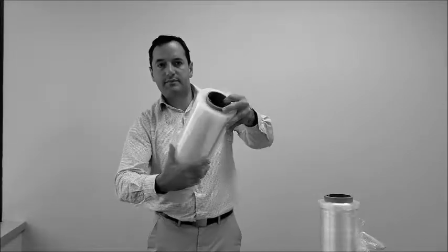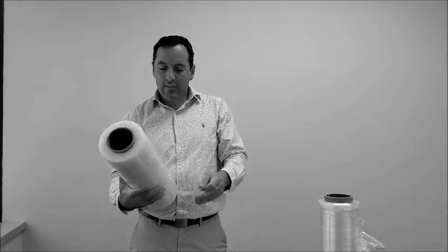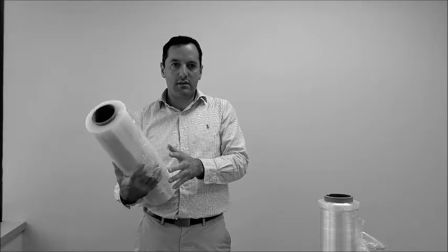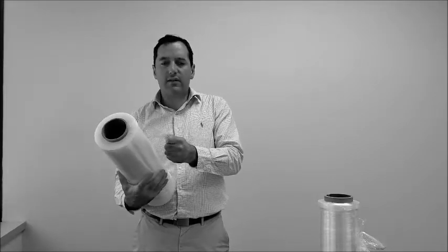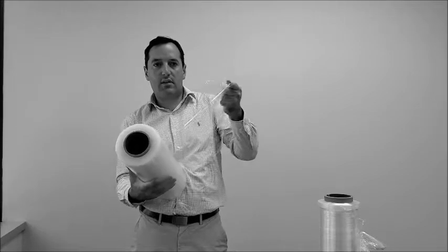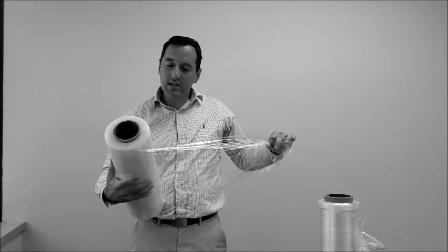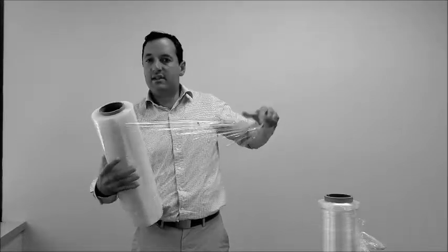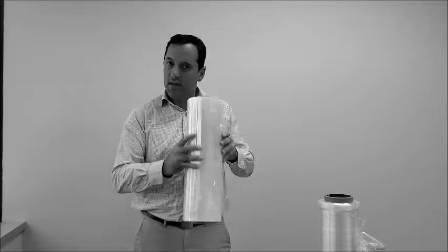The cast stretch wrap, it's got very high clarity, great for scanning barcodes. And it's got a very smooth, silent unwind. And its great stretch capability means that if you're using a machine stretch wrapper, you're probably using cast.